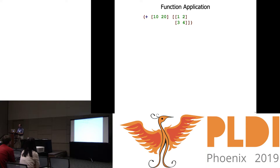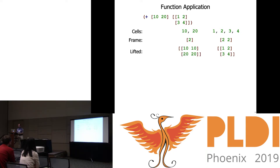At function application time we have to break arguments into cells. When applying plus, the cells are 10 and 20 in the first argument, and 1, 2, 3, and 4 in the second. The frame is a 2-vector for the first argument and a 2-by-2 matrix for the second. The expanded forms are made by replicating each cell as many times as necessary to add whatever additional dimensions we need — so 10 grows up to a vector containing 10s and 20 to a vector containing 20s, but 1, 2, 3, and 4 didn't have to grow at all.